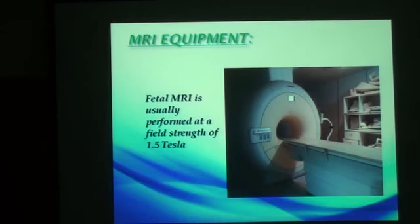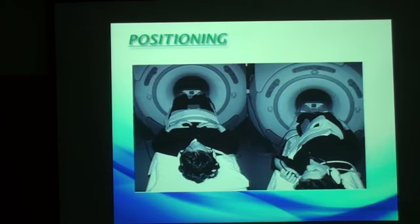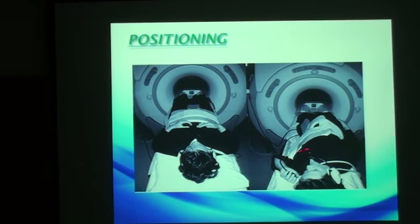The MRI equipment we use is a 1.5 Tesla machine. The coils used are multi-channel phased array coils, which give increased coverage of the fetal head with an increased signal-to-noise ratio. The patient lies in a supine position with feet first. If she cannot tolerate this due to back pain or compression of the inferior vena cava, she can lie on her left side, though this gives decreased spatial resolution compared to the supine position.